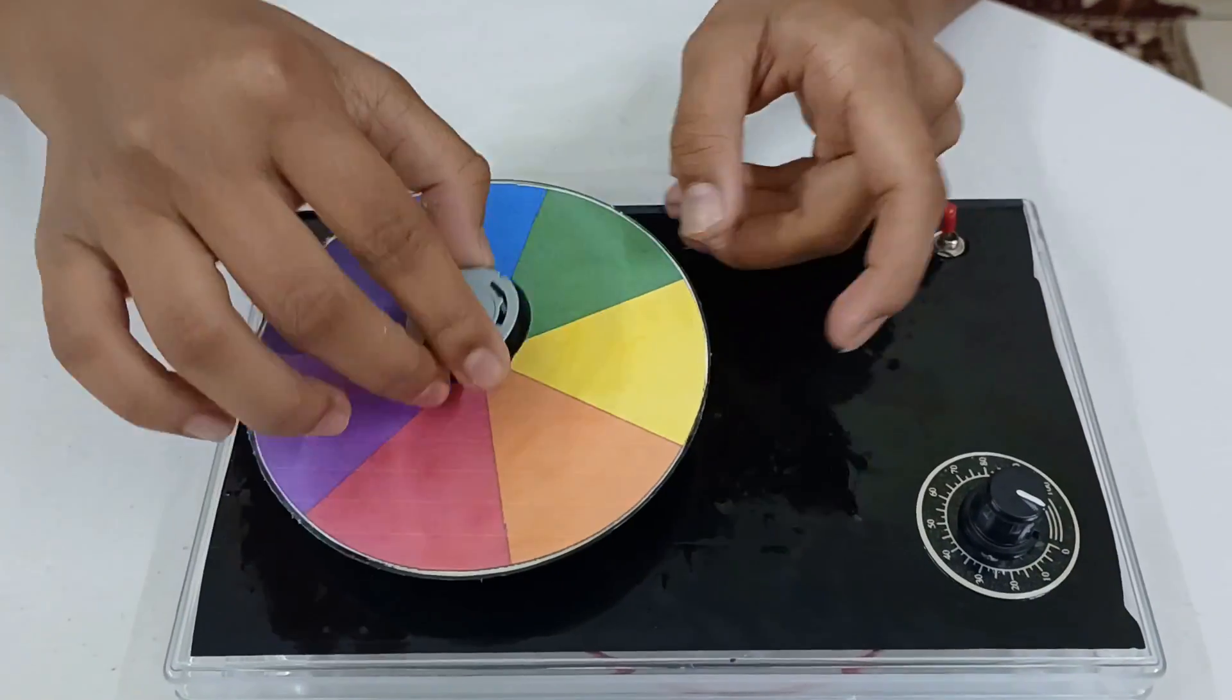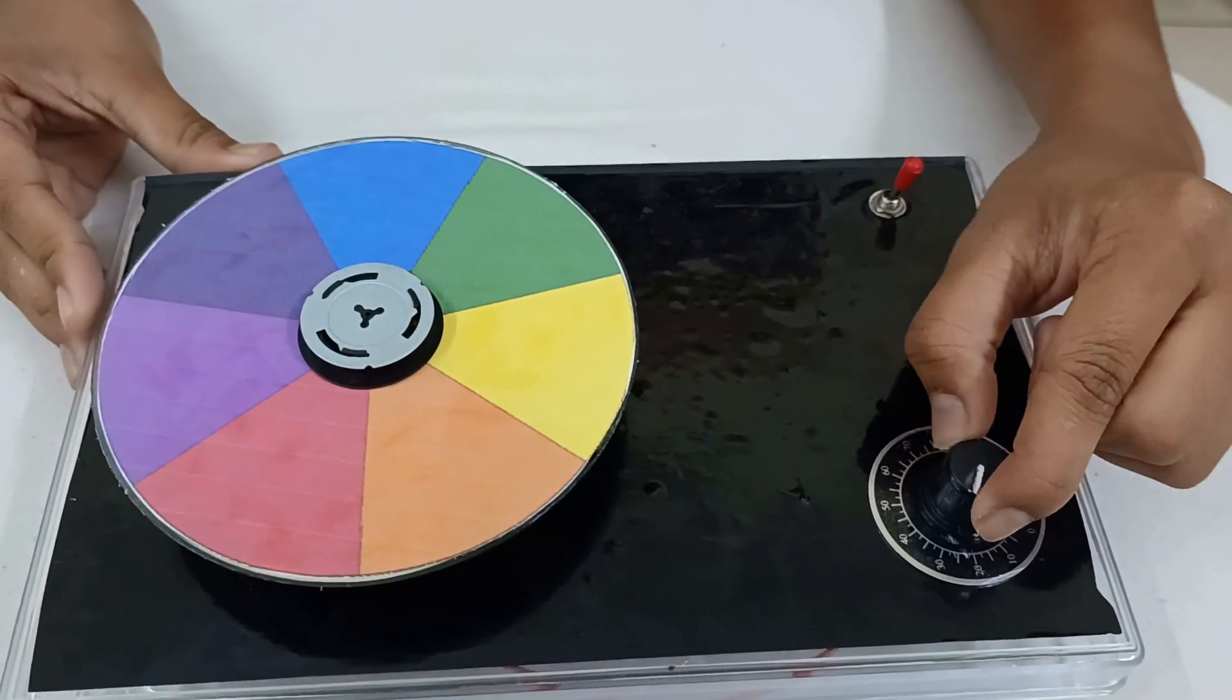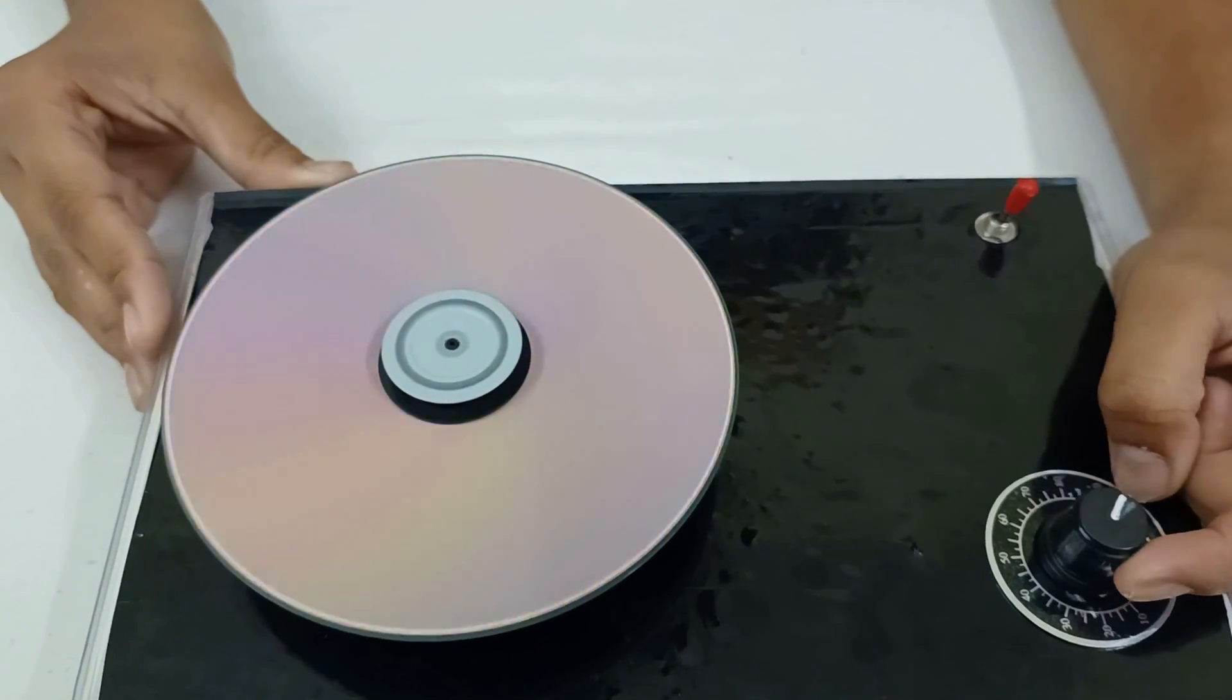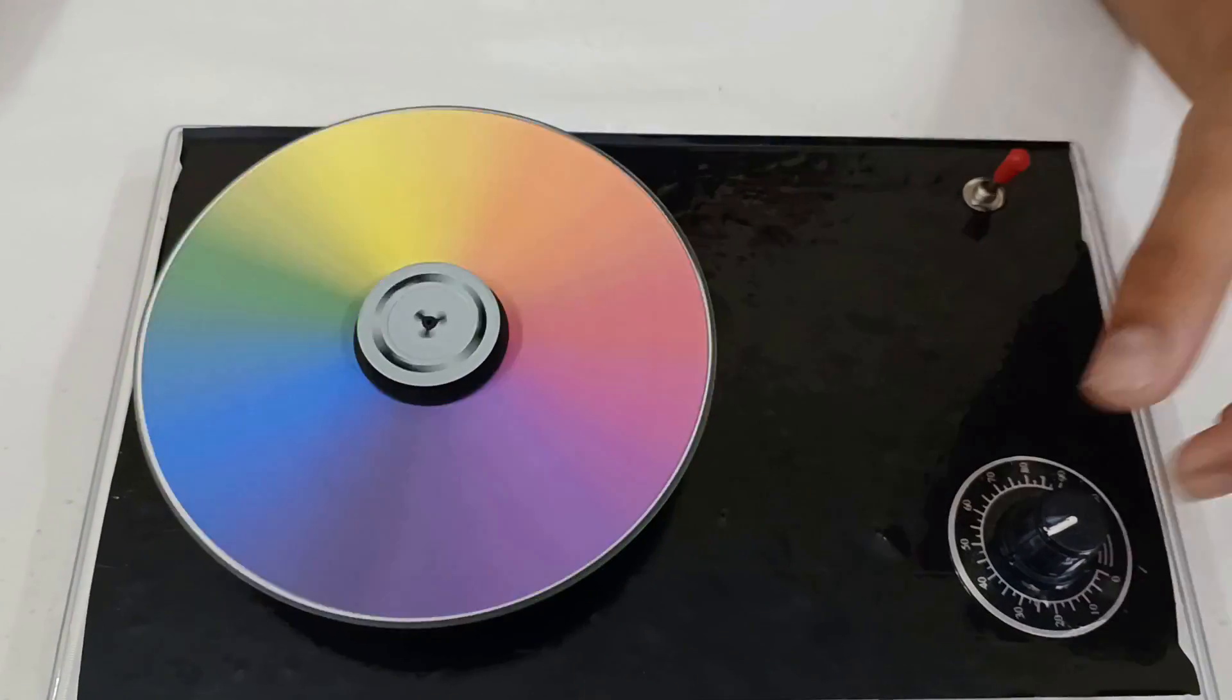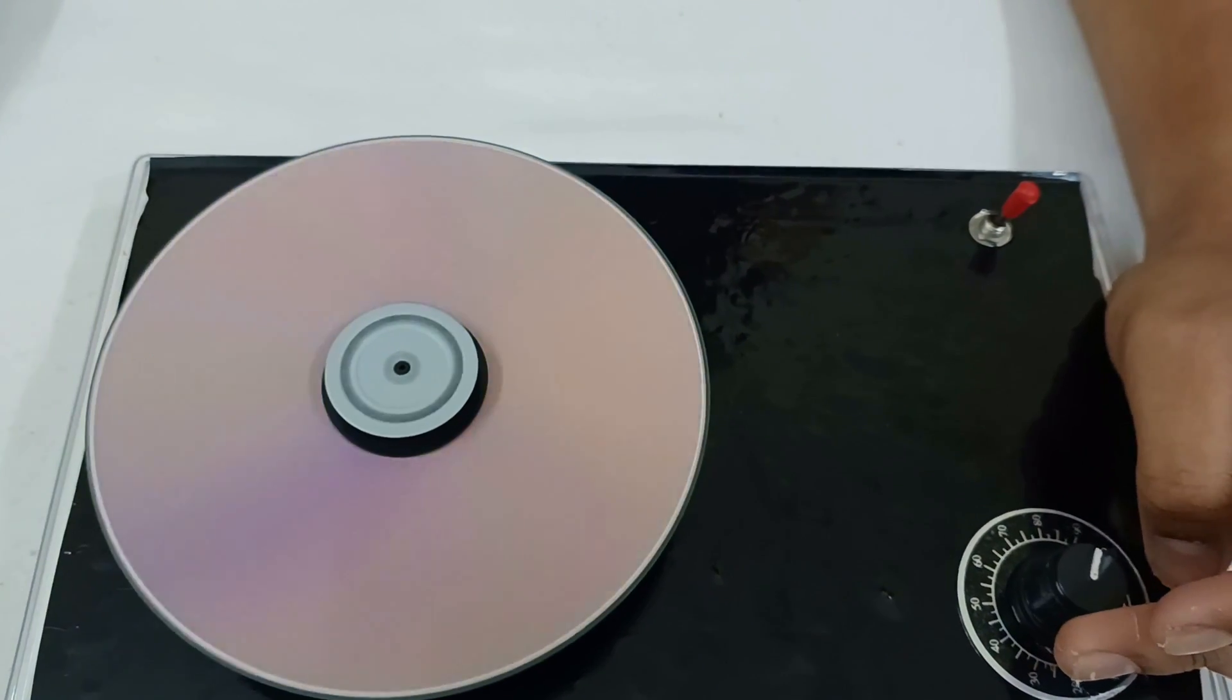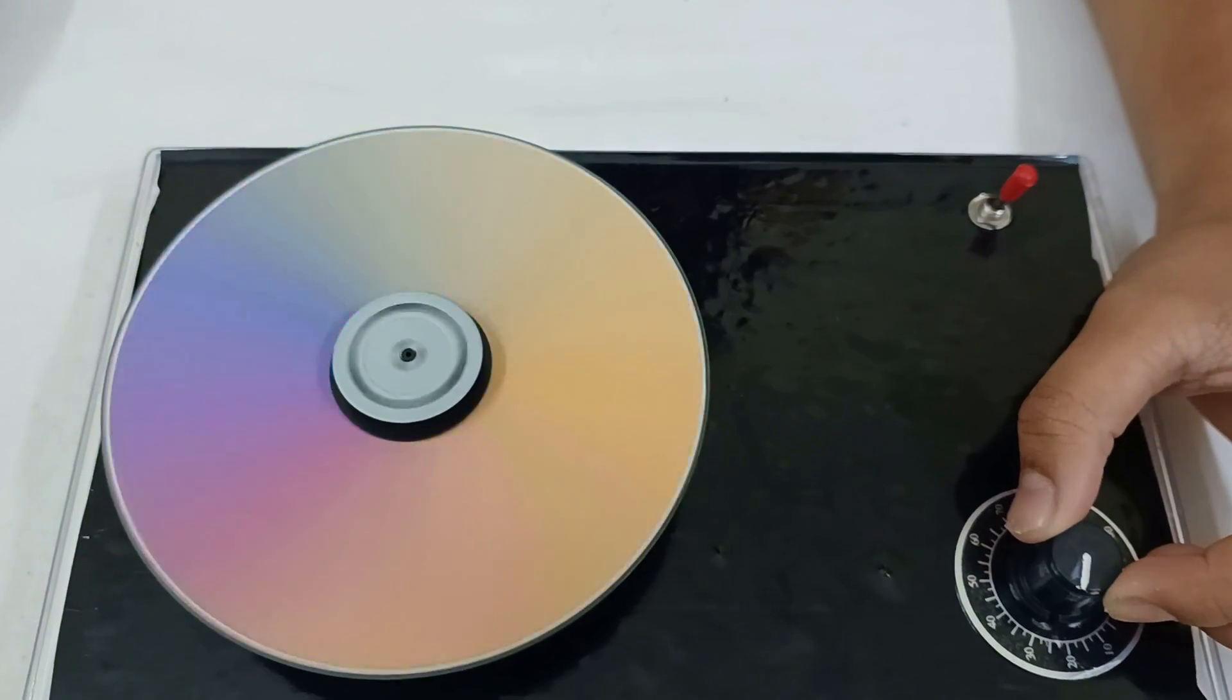Now let me switch on and check the different speed. Now you can see the rainbow color and I will increase it. It will become one color. And when I will decrease, all the seven colors come in.